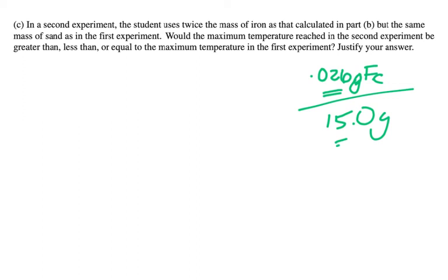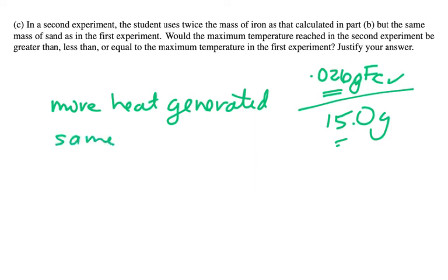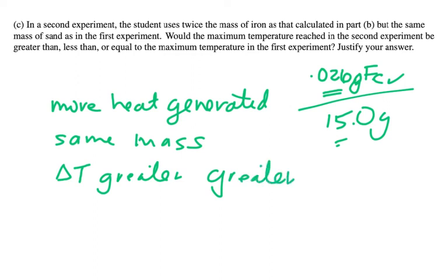However, using twice the iron generates twice the heat. With the same total mass but more heat generated (Q = mcΔT), we get a greater delta T and therefore a greater maximum temperature.